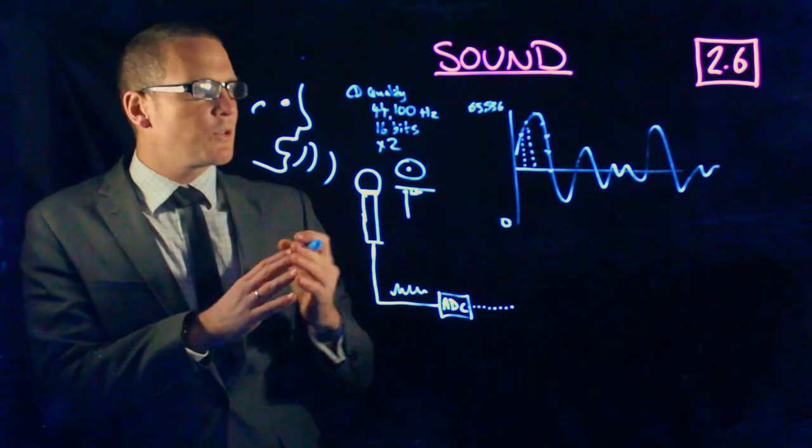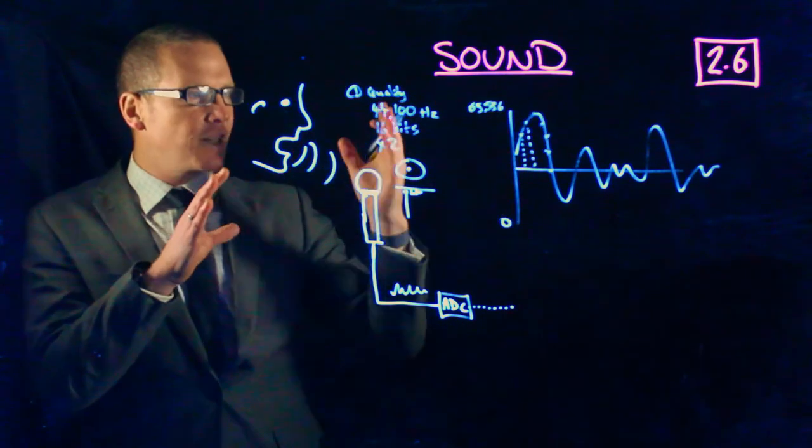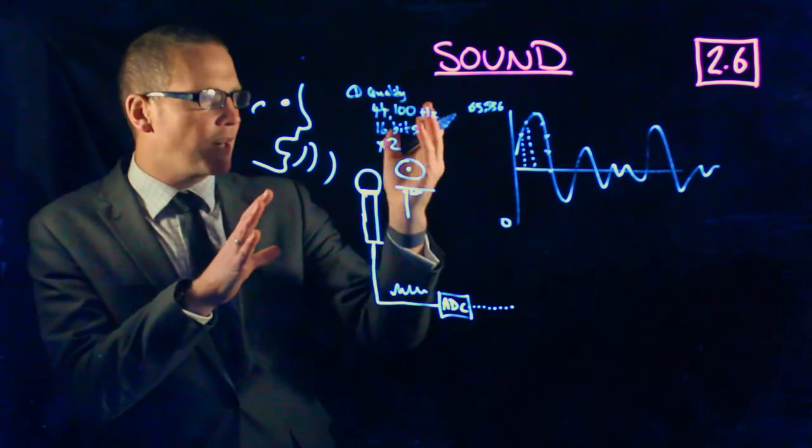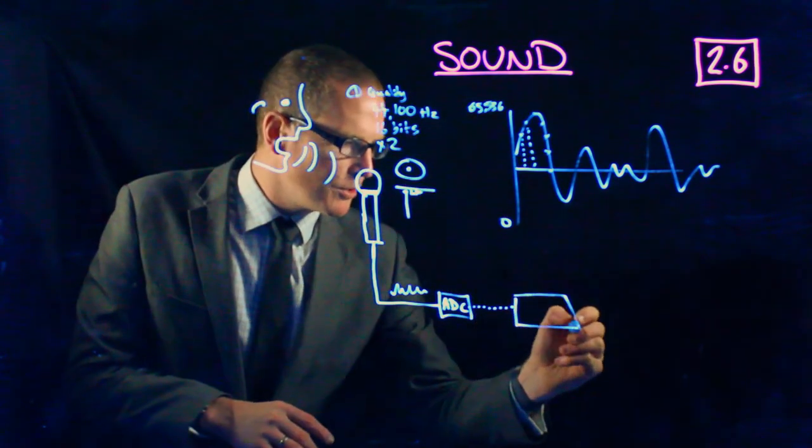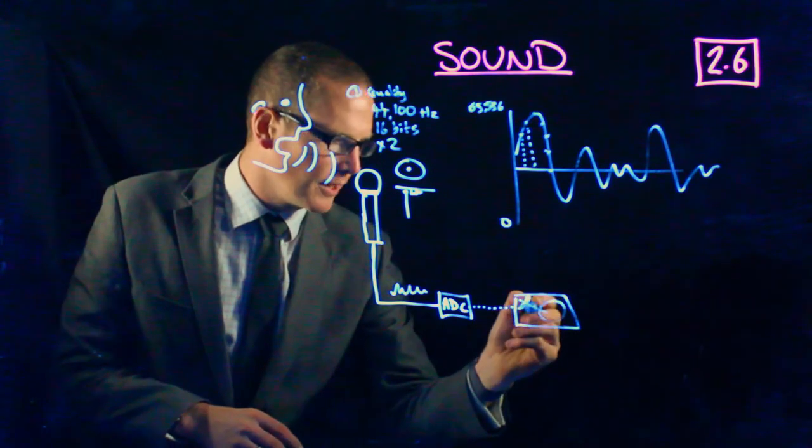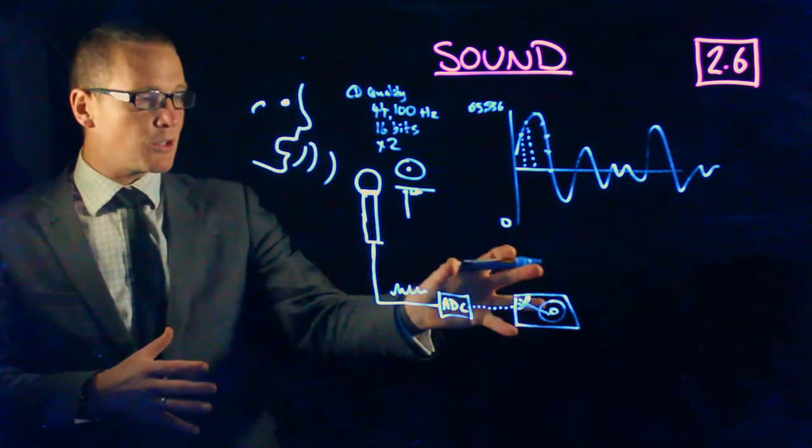It's storing all of those ones and zeros, measuring this curve 44,100 times per second and storing that on your computer's storage device—your hard drive.